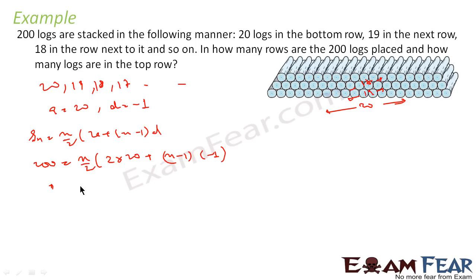So what equation we got is, this becomes 400. 400 is equal to n times, sorry, this is 40 minus n plus 1. This is 1, this is 40, or this is nothing but n times (41 minus n).